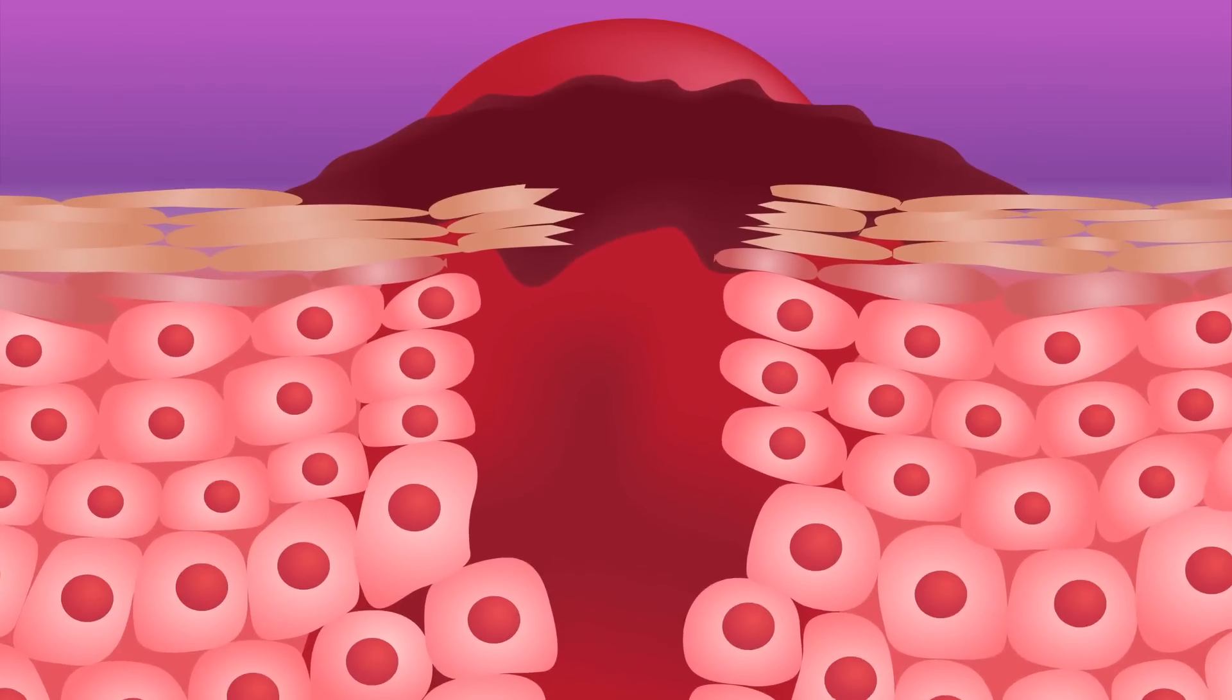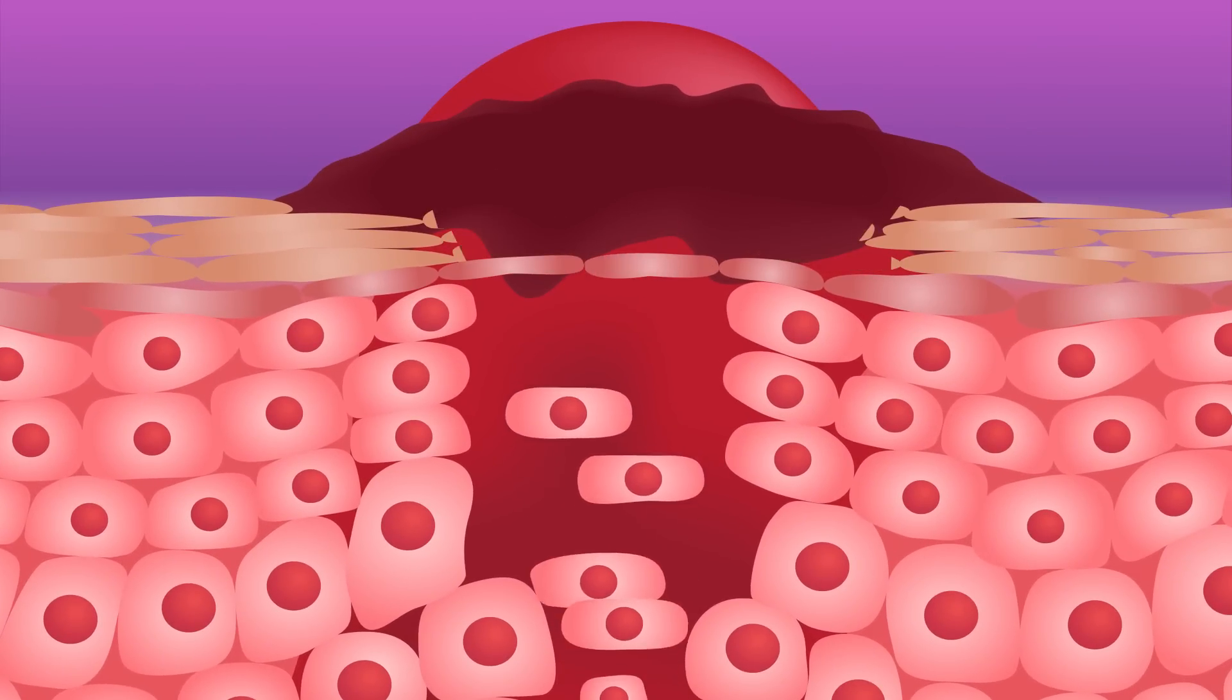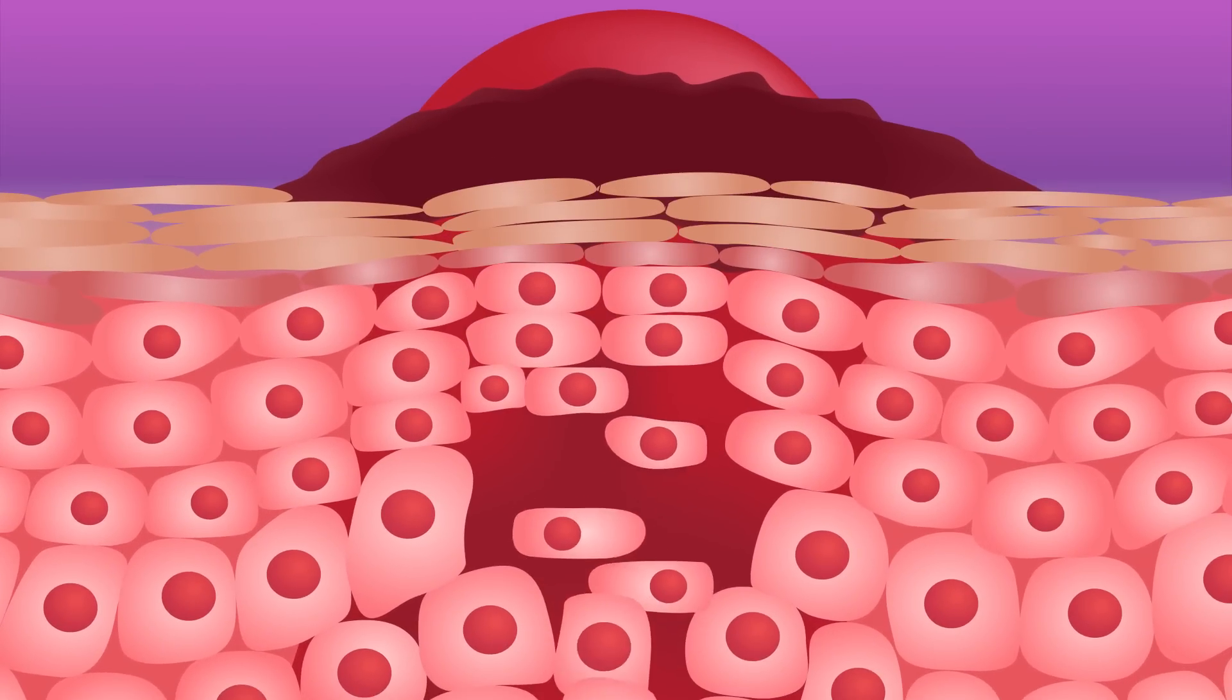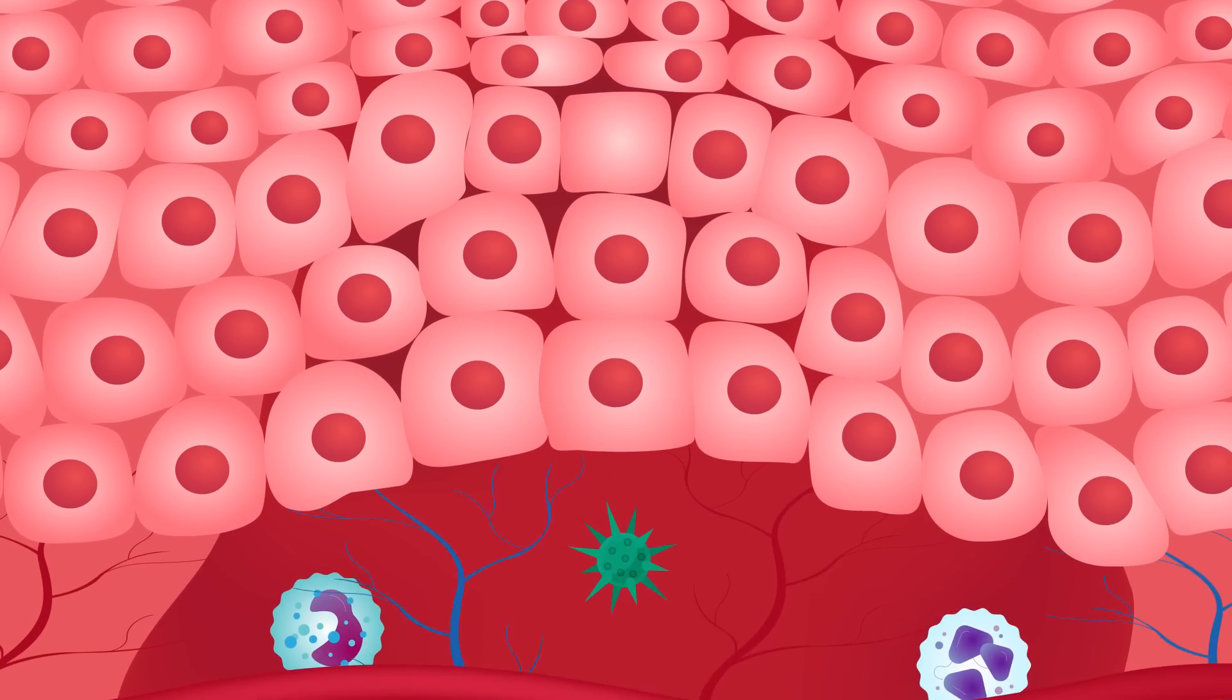Damaged blood vessels are being repaired, dead skin cells are being removed and replaced with brand new ones, and white blood cells rove around looking to root out and eliminate any germs that might have gotten in.